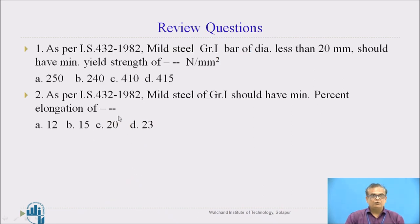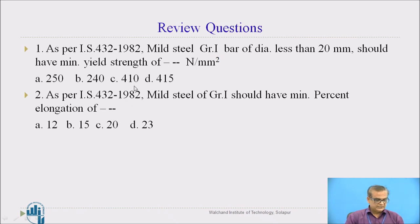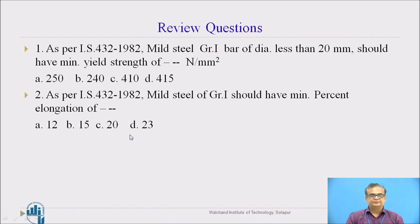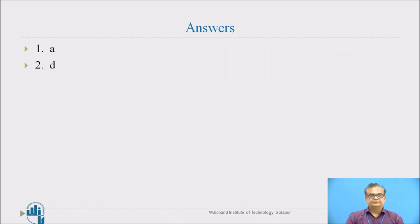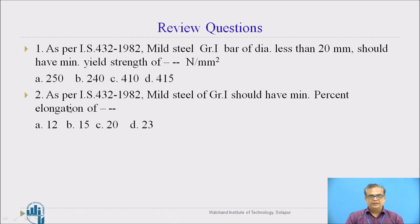Here are two review questions. Question 1: As per IS 432-1982, a mild steel Grade 1 bar of diameter less than 20 mm should have a minimum yield strength of ___ N/mm². Question 2: As per IS 432, mild steel of Grade 1 should have a minimum percent elongation of ___. Answers: Question 1 — A, 250. Question 2 — D, 23.